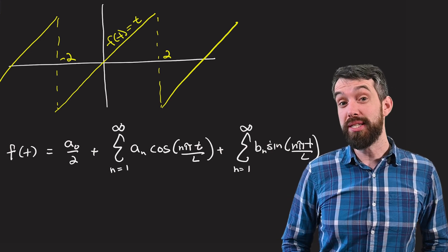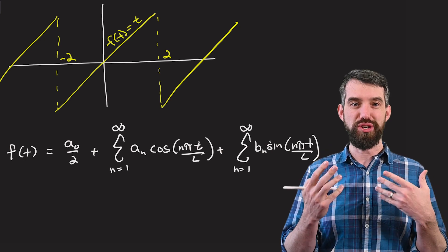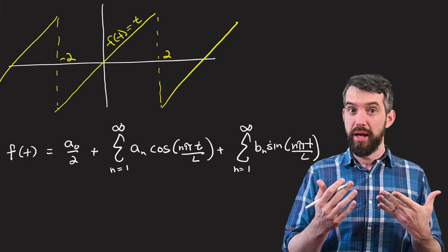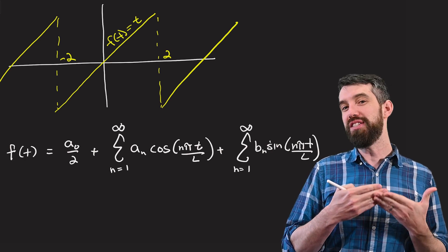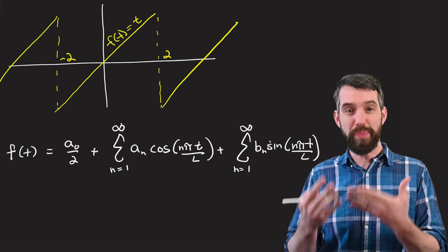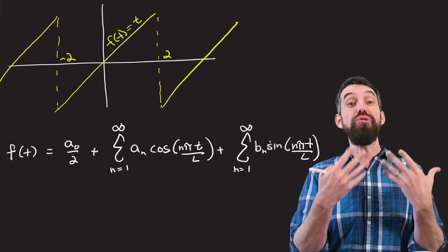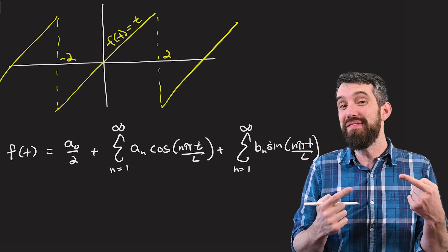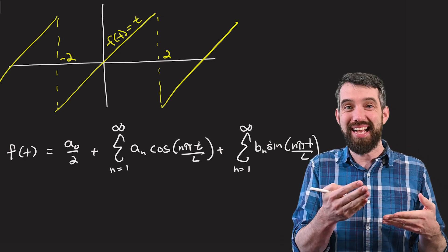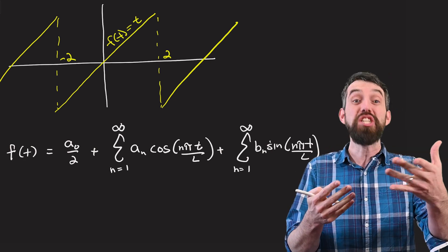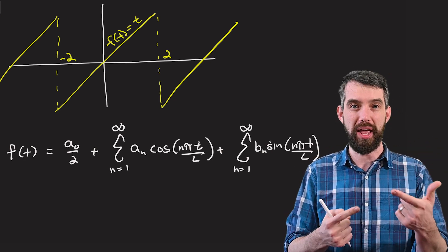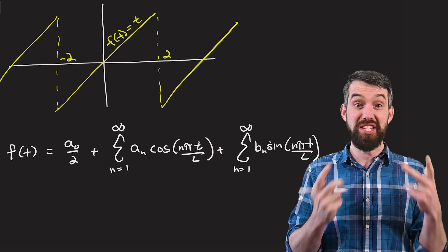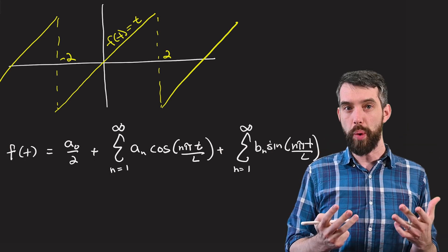The function that I'm going to study is called the sawtooth wave, and you can sort of visually see why. It's the function f(t) = t, but it is only f(t) = t between minus 2 and plus 2. And then beyond that, outside of that interval, it extends periodically. It's kind of like another copy of the same graph between 2 and 6 and then 6 and 10 and so on and so on, just periodically doing the exact same thing.